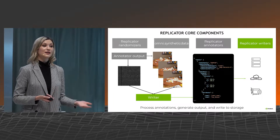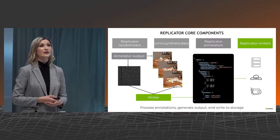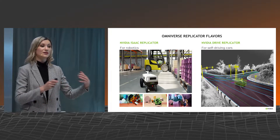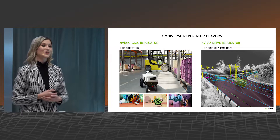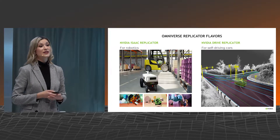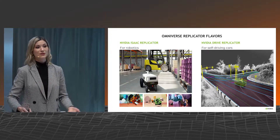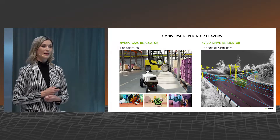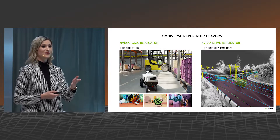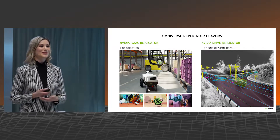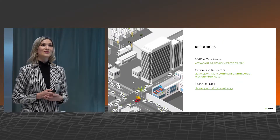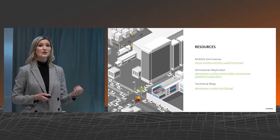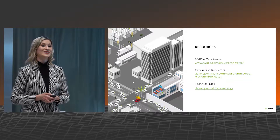Omniverse Replicator today comes in two flavors. For robotics, we have NVIDIA Isaac Replicator with robotic samples, which you can connect to Isaac Gym for reinforcement learning training. For autonomous vehicles, we have NVIDIA Drive Replicator to generate the world outside and simulate trajectories of movements. Here are a couple of resources: the link to NVIDIA Omniverse, Omniverse Replicator documentation, and I highly recommend checking our technical blog where we often publish updates on our hardware, software, and a lot about synthetic data.